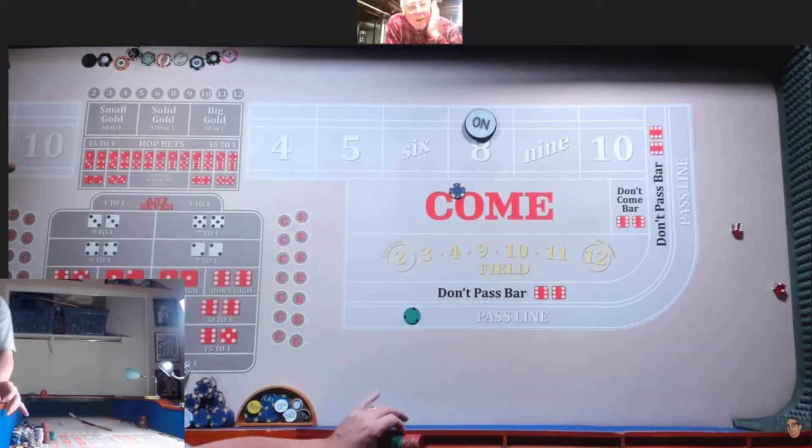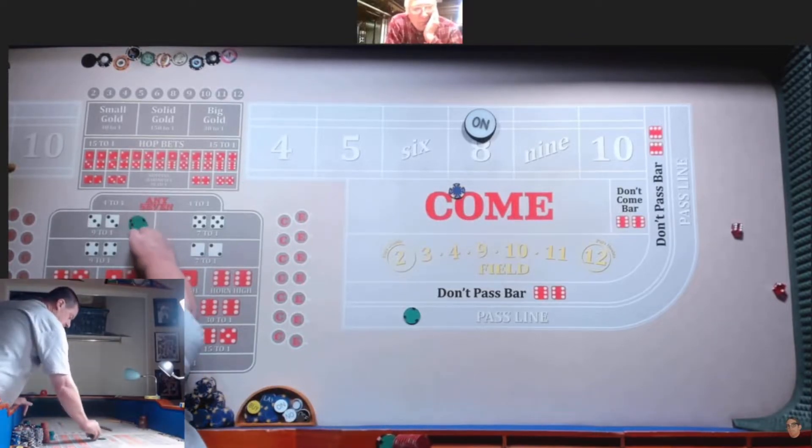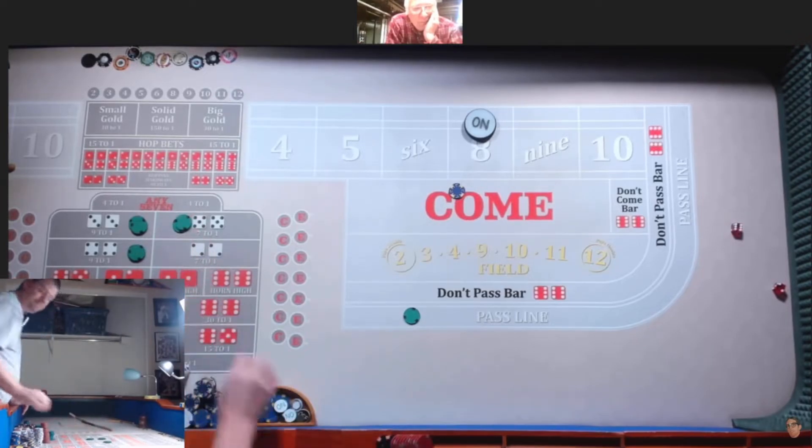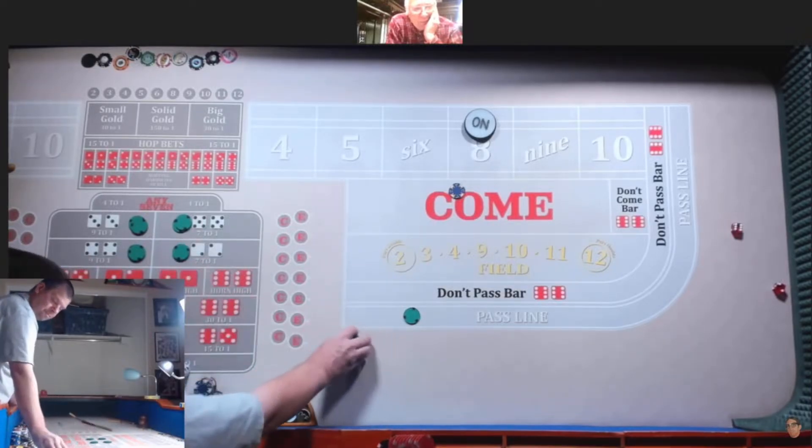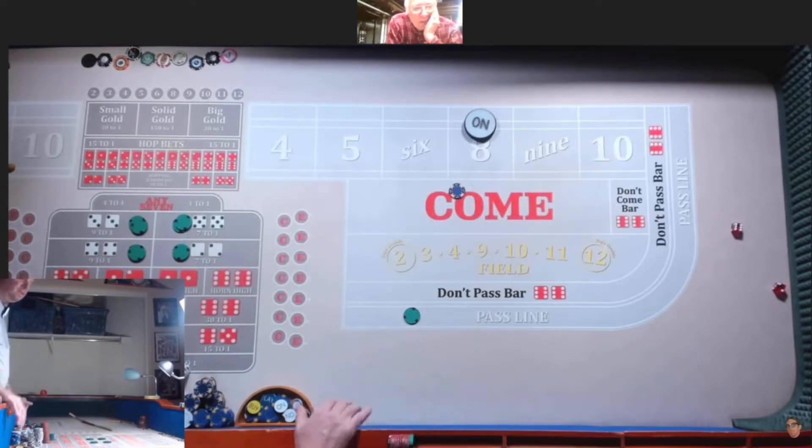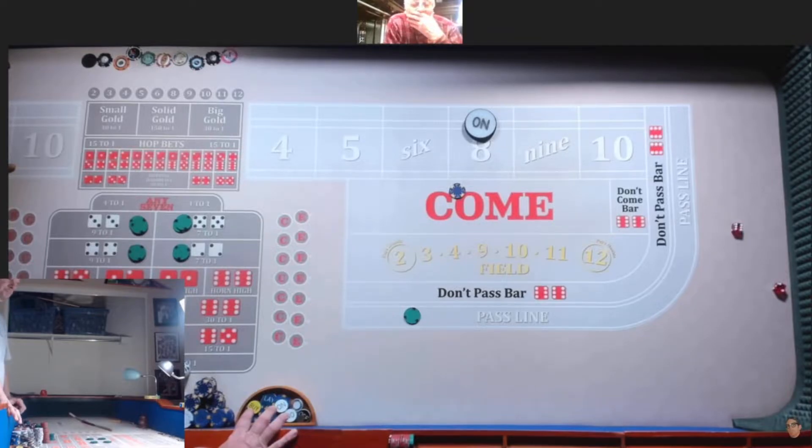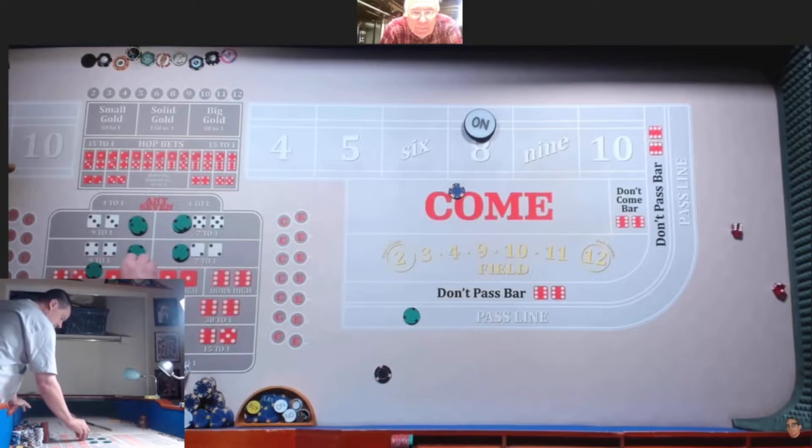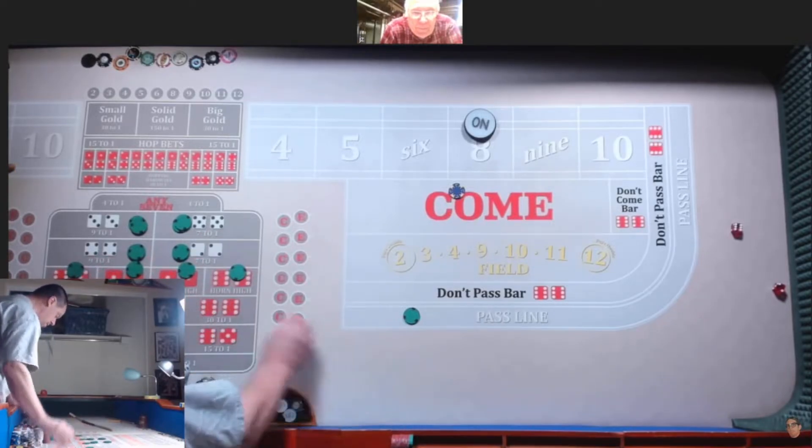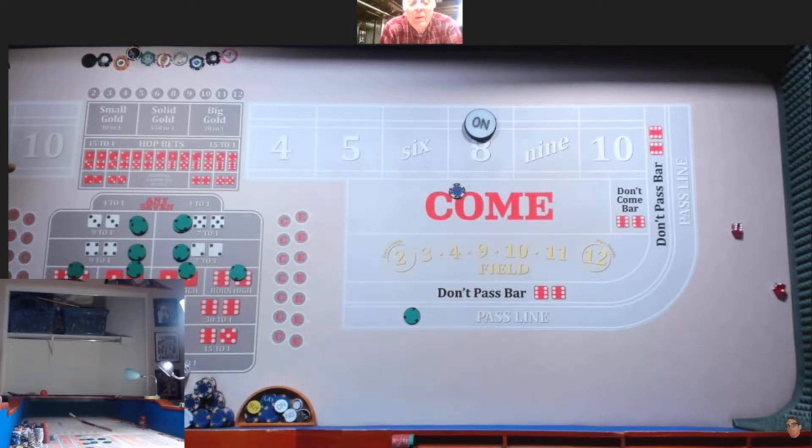All right, 400 to work with. And you got a quarter there, so you only got 400. Let me have $50 on all the hard ways. And what do I got left in there? 150, 200 even.